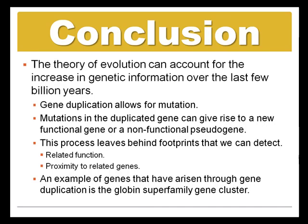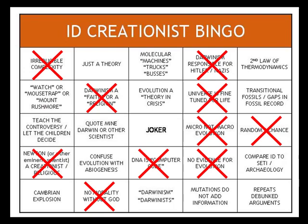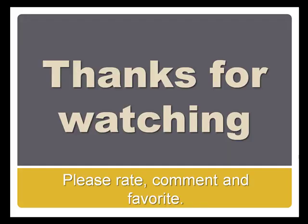In this video I hope to have demonstrated that new information can and has been added by evolution. By mutating duplicated genes, a new gene with a related function to the original gene can arise. I have also shown that mutations in the duplicated gene can go awry and lead to the formation of non-functioning pseudogenes. This process leaves behind certain footprints that we can see, and an example of a gene cluster found by looking at those footprints is the globin superfamily. The criticism made by opponents of evolutionary theory would seriously endanger the theory if it were correct. However, as we can see, mutations and natural selection can give rise to new genetic information, and so the criticism maintained by the opponents is invalid, just like many other arguments against evolution. Thank you very much for watching.